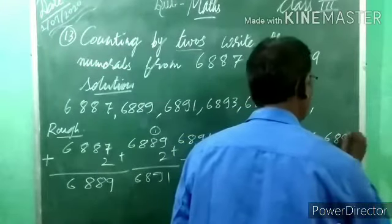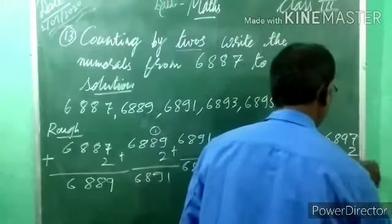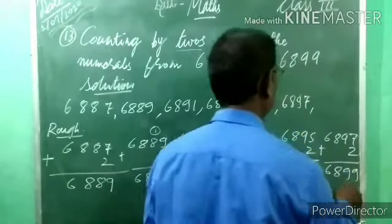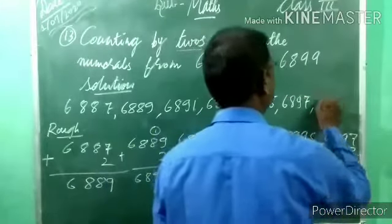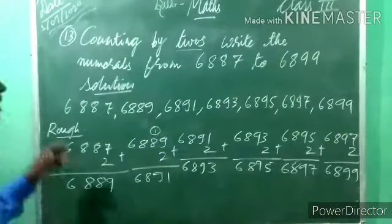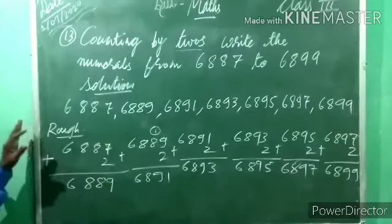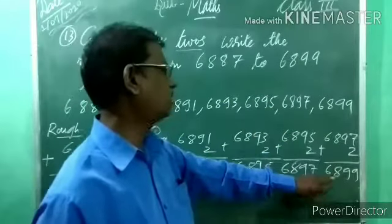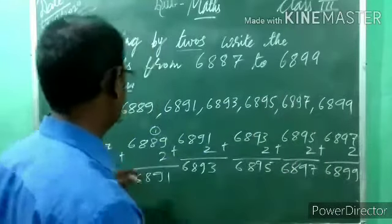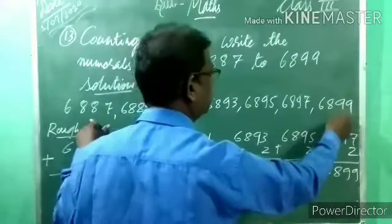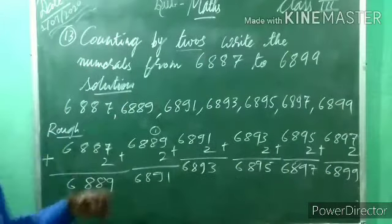In 6,895 add 2: 5 plus 2 is 7, 9, 8, 6 — so 6,897. Then 6,897 plus 2: 7 plus 2 is 9, 9, 8, 6 — so 6,899. We got that number, so we stop here. This is an example of skip counting. We started from 6,887 and ended at 6,899. Do rough work first, then you will get the answer.